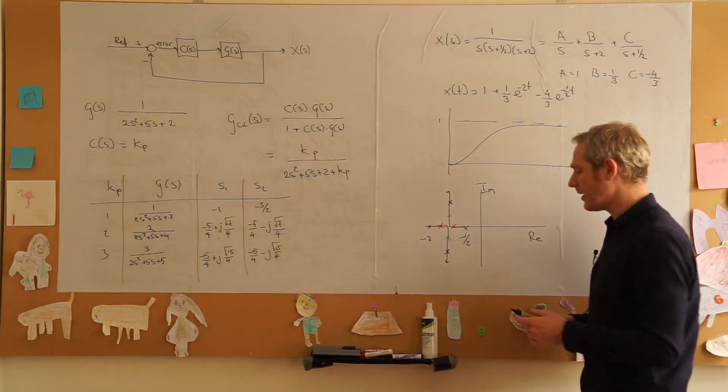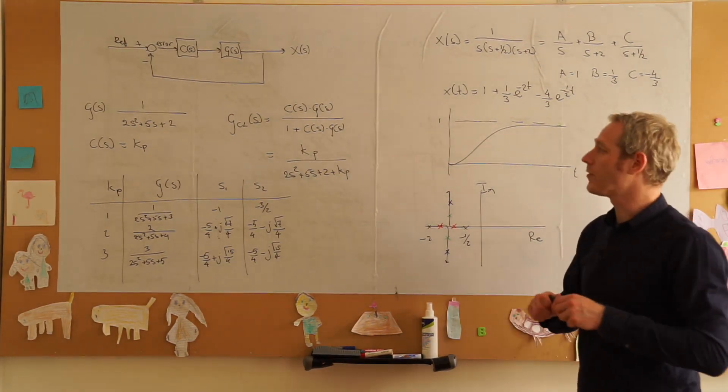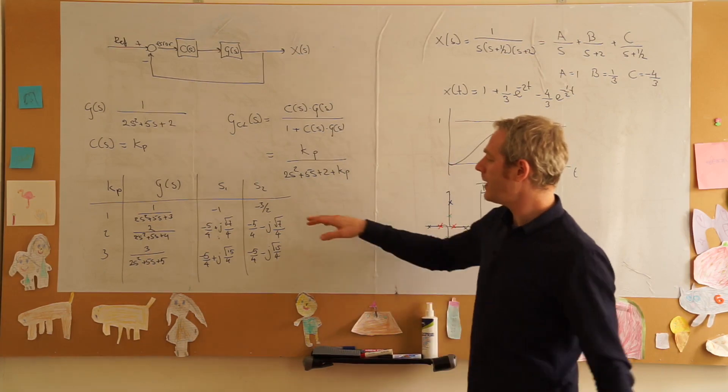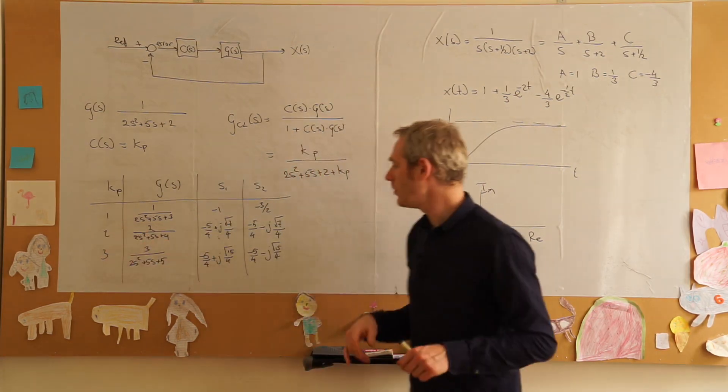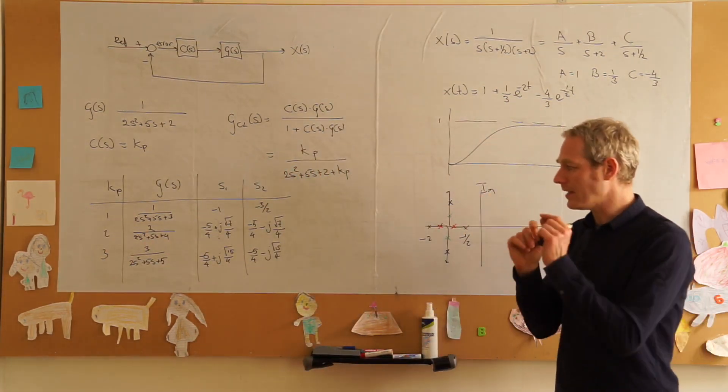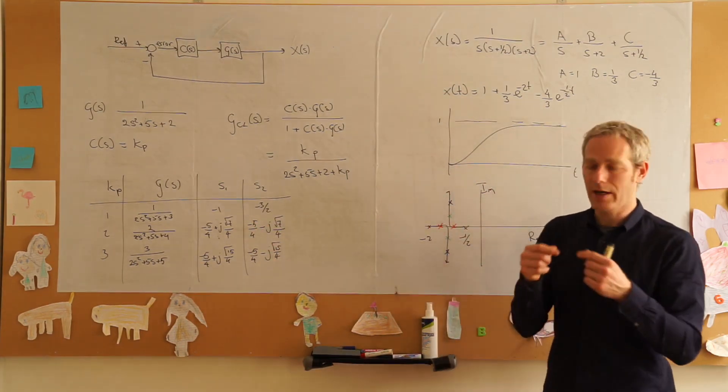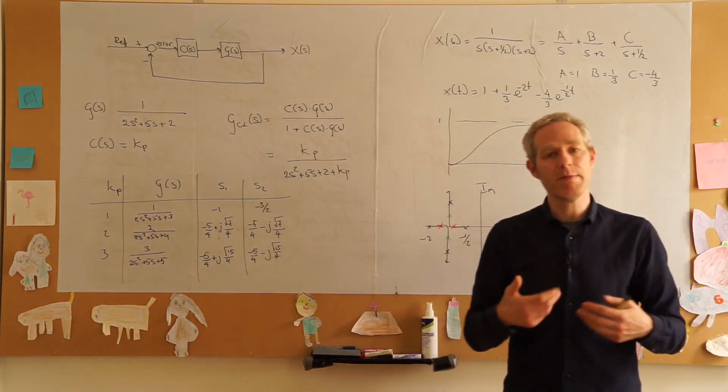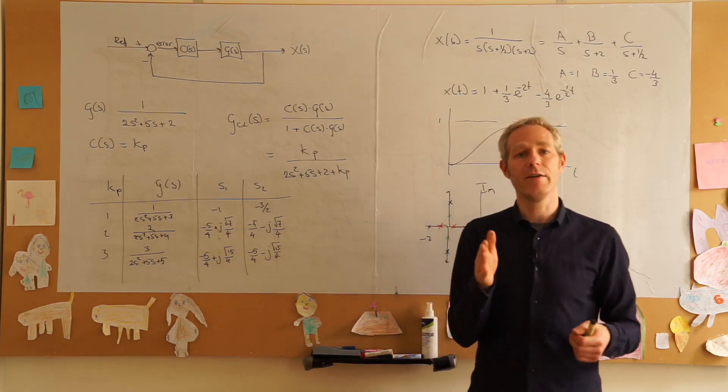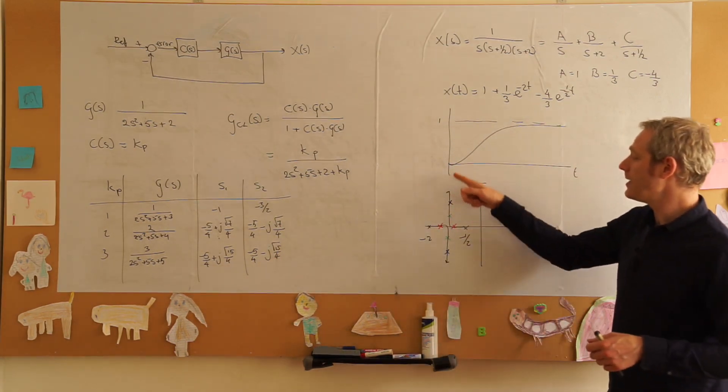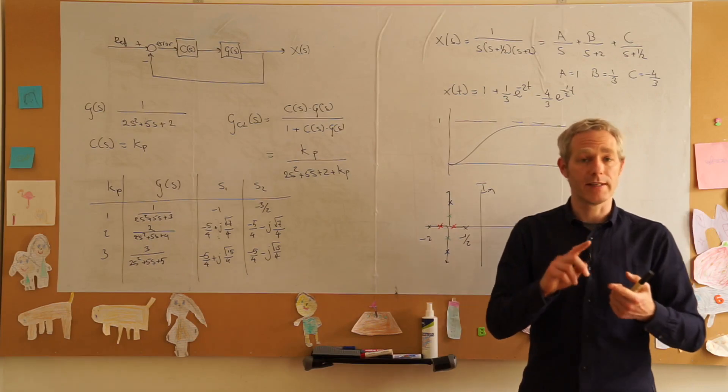This graph we knew was the root locus plot. If we want to see the effect of this particular type of control on this system, we see that for low values of k they move slightly together. There is a value of k in between one and two where the poles collapse into one, namely minus five over four. We know that they collapse somewhere onto each other.